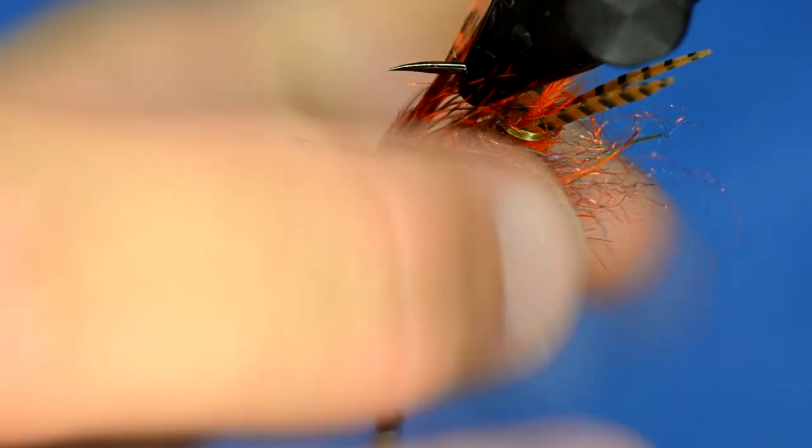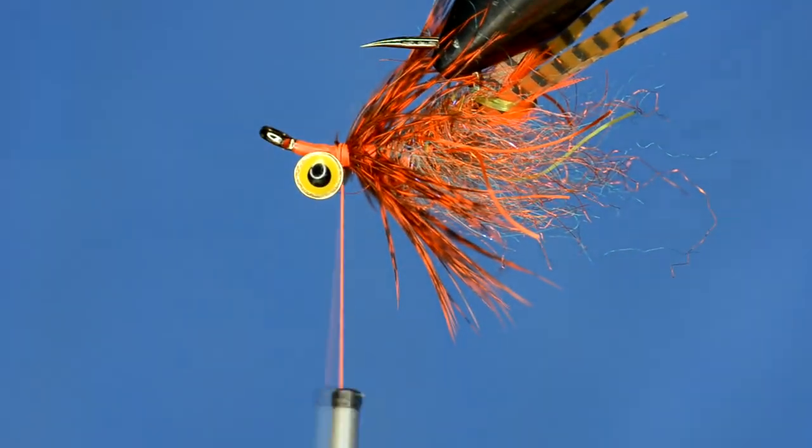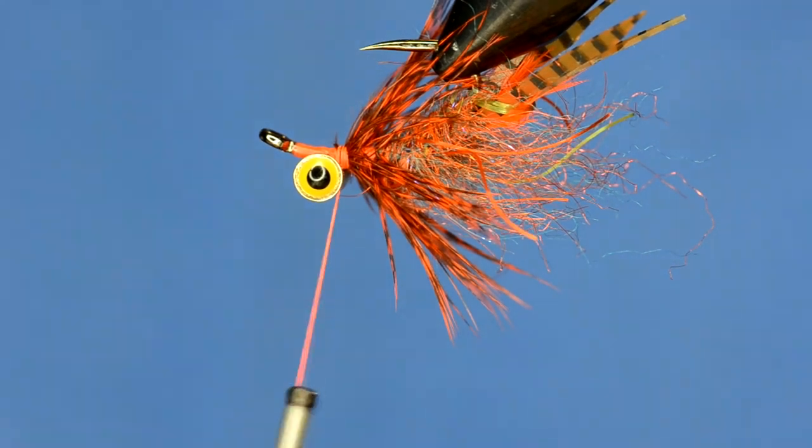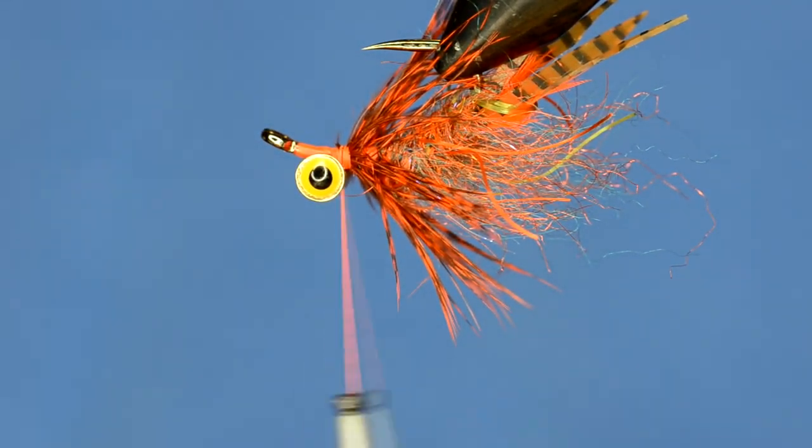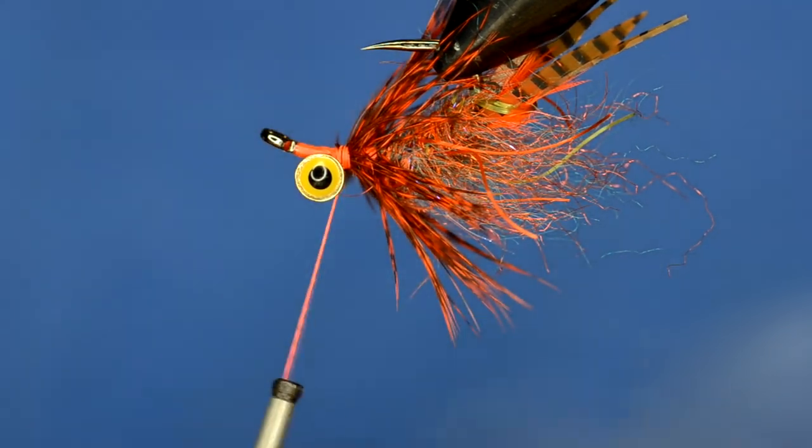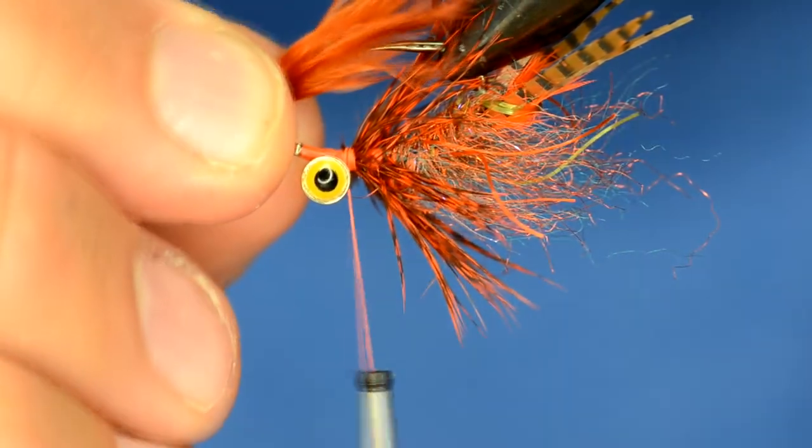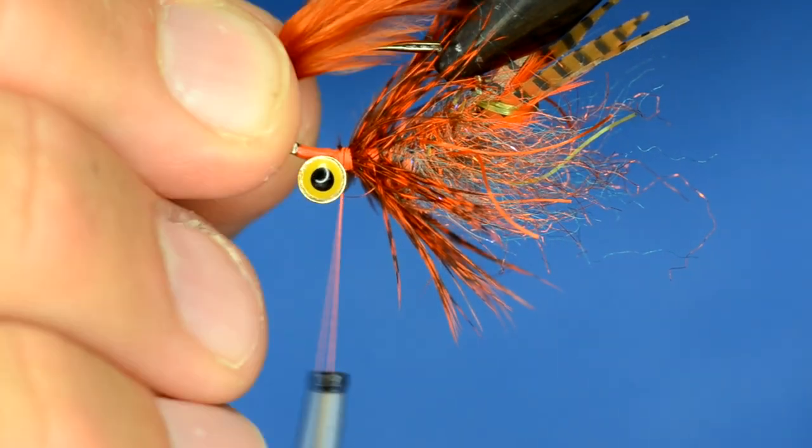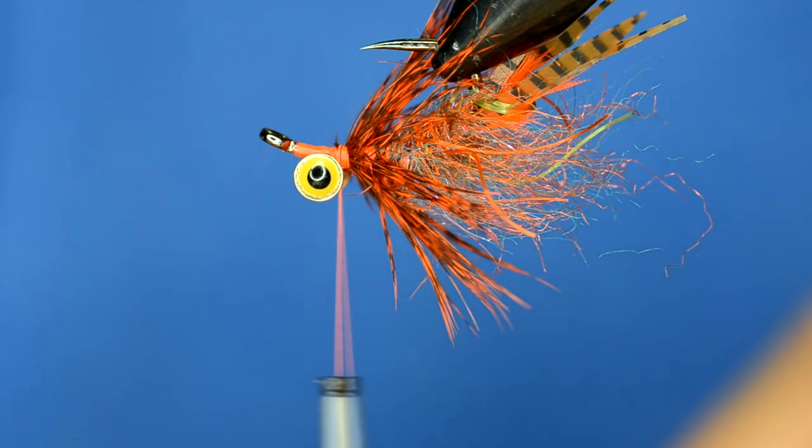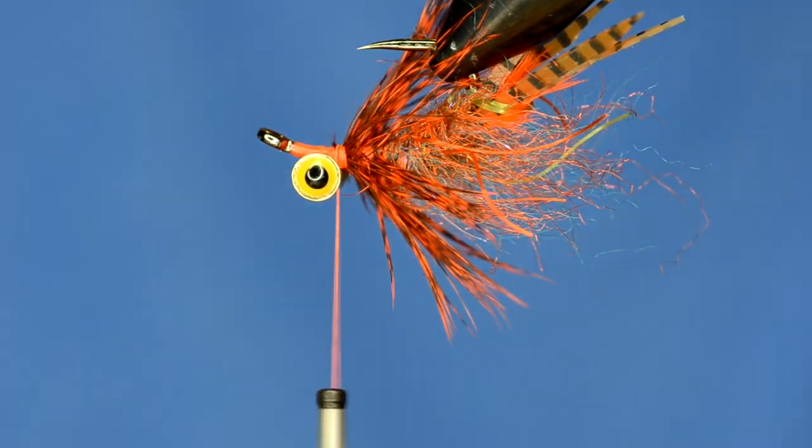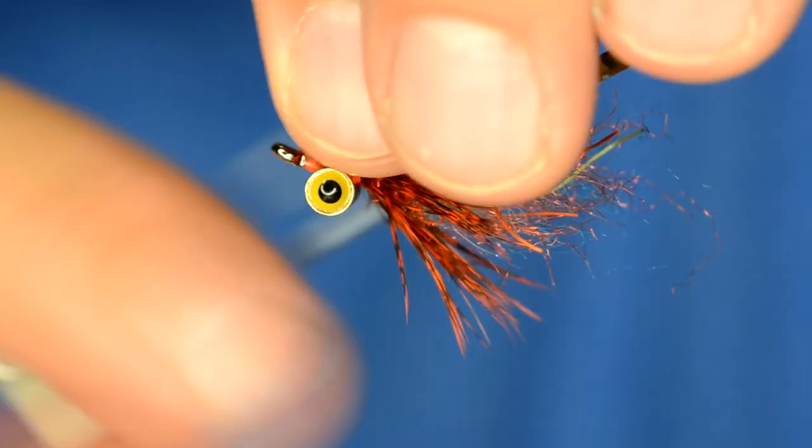Okay so we're starting to look real carp-y right now. Then I'm going to make a little bit of a wing over the top of the fly with some rusty brown Woolly Bugger Marabou. So it's just going to kind of go up over the top of the fly like that. Now I'm going to trim this before I tie it in. I've got it trimmed. I'm just going to kind of stick it on top here.